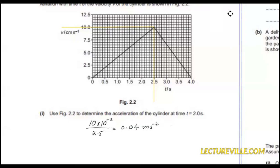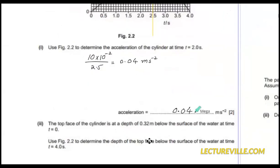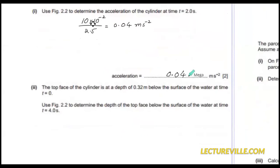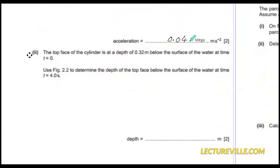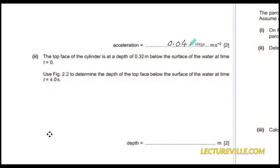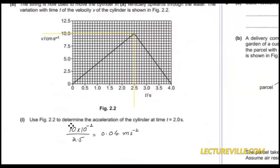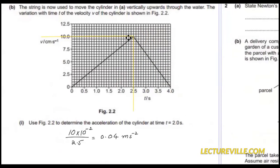The answer cannot be given in centimeters per second squared because the examiner has provided the unit at the end of the question which is meters per second squared, so we have to convert this. The top face of the cylinder is at a depth of 0.32 meters below the surface of the water at time t equals zero. Use this figure to determine the depth of the top below the water surface at time t equals 4 seconds.